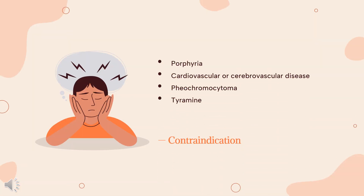Contraindications include Porphyria, Cardiovascular or cerebrovascular disease, and Pheochromocytoma. Tyramine, found in several foods, is metabolized by MAO. Ingestion and absorption of tyramine causes extensive release of norepinephrine, which can rapidly increase blood pressure to the point of causing hypertensive crisis.